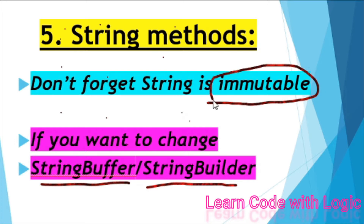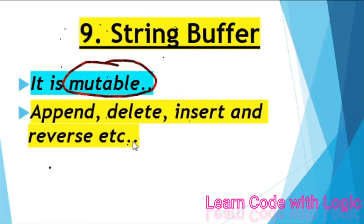Since string is immutable, we can't change any of its content. StringBuffer supports mutability — mutable means we can change the value. It might be append, delete, insert, or reverse — any of the functions we couldn't achieve in the string class, we can do using StringBuffer.